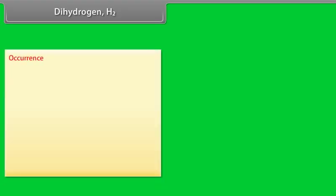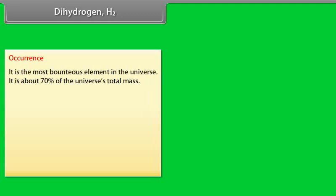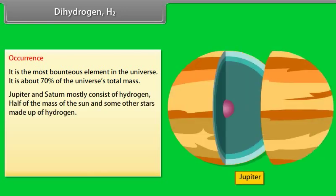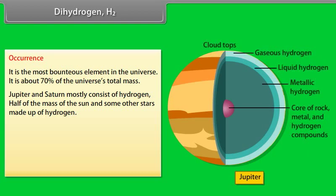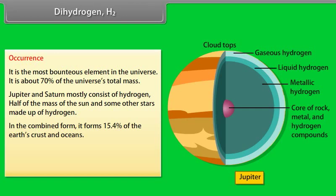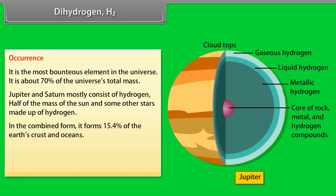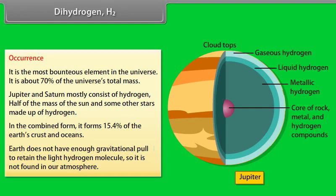Dihydrogen H2 Occurrence. Dihydrogen is the most bounteous element in the universe. It has about 70% of the universe's total mass. Jupiter and Saturn mostly consist of hydrogen. Half of the mass of the sun and some other stars made up of hydrogen. In the combined form, it forms 15.4% of the Earth's crust and oceans. Earth does not have enough gravitational pull to retain the light hydrogen molecule. So, it is not found in our atmosphere.